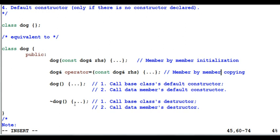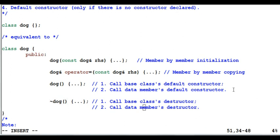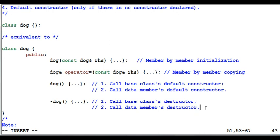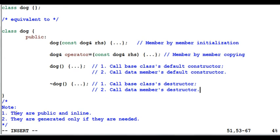For the destructor, every class has a destructor, so it should have no problem calling the base class's destructor and the data members' destructor. However, what if the base class has a private destructor? Then this destructor cannot be generated either. So compiler-generated functions are sometimes handy, but you need to keep these things in mind. Also note: all compiler-generated functions are public and inline, and they are generated only if they are needed — if they are not used at all, they will not be generated even if the compiler is capable of generating them.